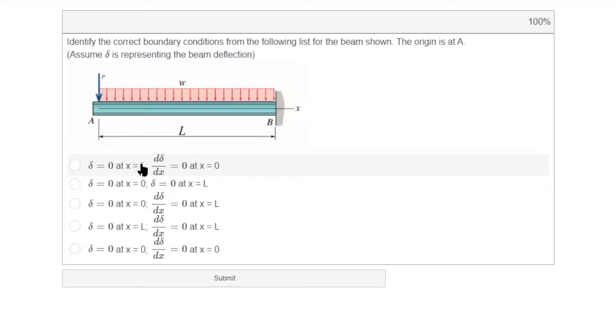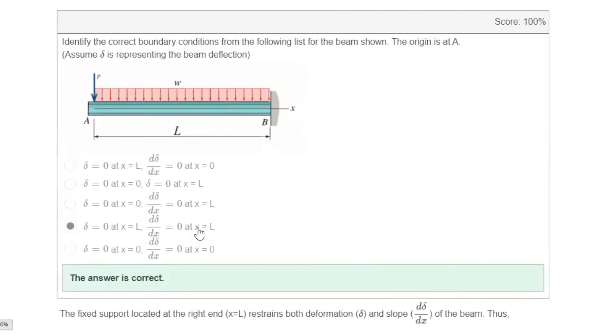What is slope? Slope is the first derivative of deformation, right? So in this case, we know that delta is equal to zero at x equal to l. And derivative of delta with respect to x is also zero at x equal to l. So this is going to be the right answer for this problem. Does that make sense?